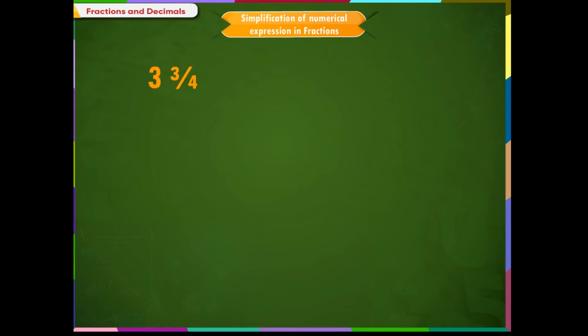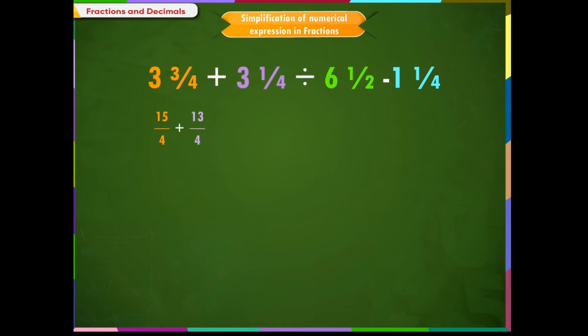Simplify: 3 and 3/4 plus 3 and 1/4 divided by 6 and 1/2 minus 1 and 1/4. Step 1: Convert the mixed numbers into improper fractions. 3 and 3/4 becomes 15/4, plus 3 and 1/4 becomes 13/4, divided by 6 and 1/2 becomes 13/2, minus 1 and 1/4 becomes 5/4.